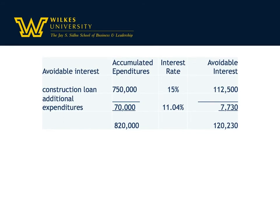That's what we calculate. The $820,000 is the weighted average accumulated expenditures. The $750,000 is the construction loan. The excess amount only exists if the construction loan is less than total expenditures. We have $70,000 in excess expenditures, multiplied by the weighted average rate, and we end up with construction loan interest avoided of $112,500, plus $7,730 in avoidable interest on the excess $70,000. So total avoidable interest is $120,230.